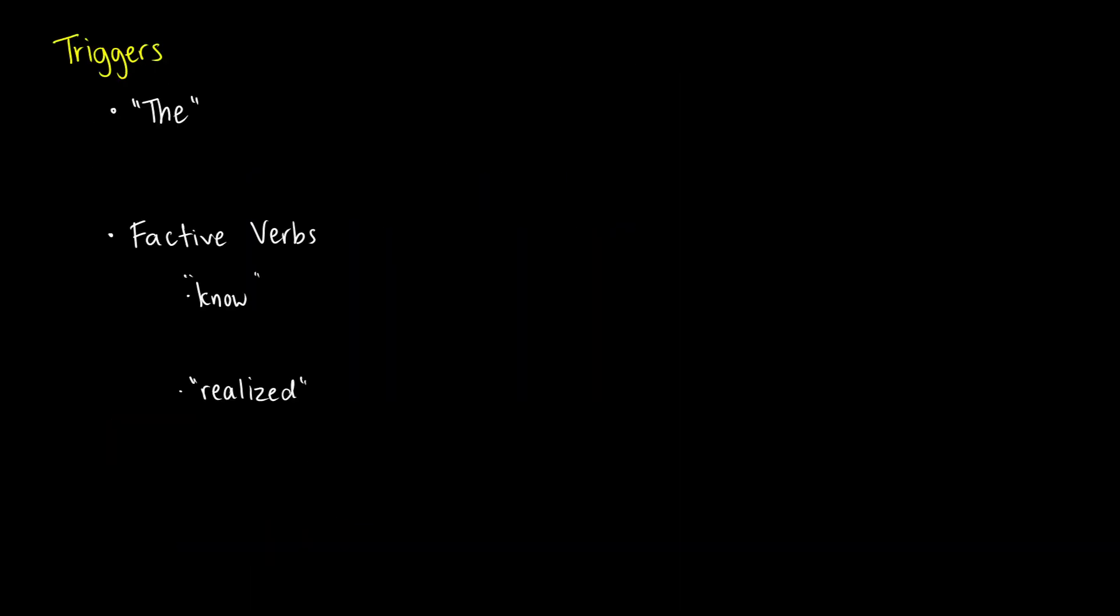Now there are a few triggers I want to talk about. These are different types of words that trigger presuppositions. Whenever you hear a word like 'the', what it's doing is presupposing uniqueness and existence. Whenever you see 'the', the expectation is that that thing exists.